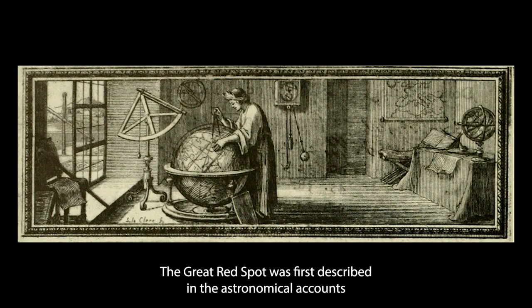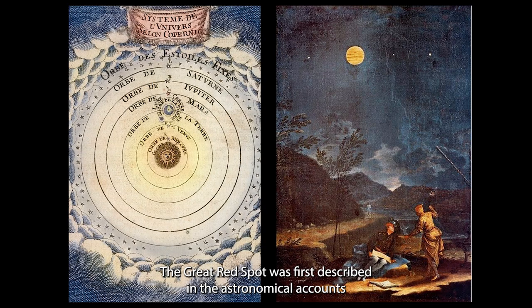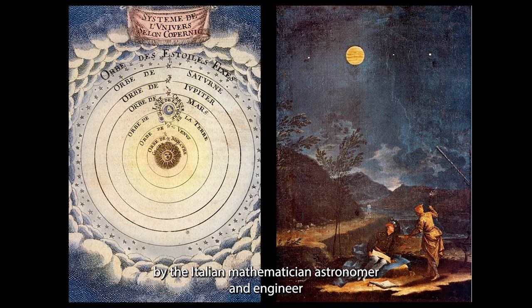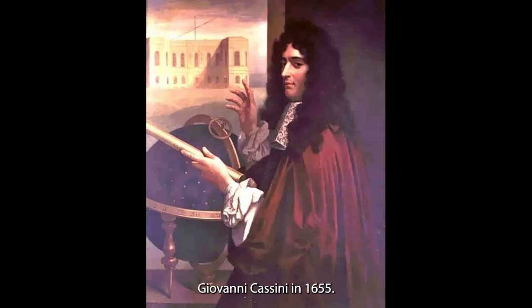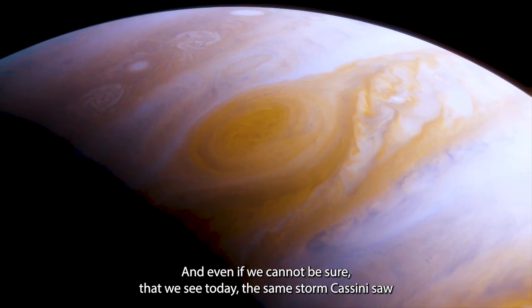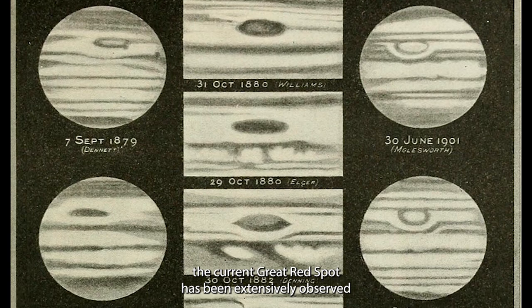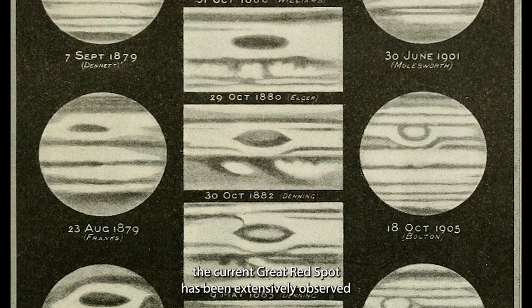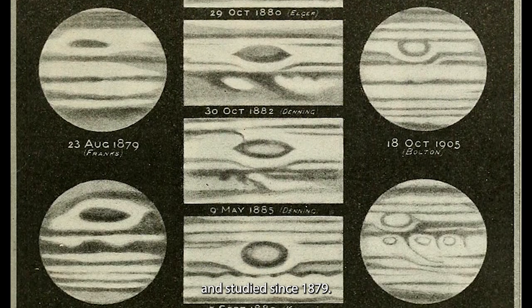The Great Red Spot was first described in the astronomical accounts of the Italian mathematician, astronomer and engineer Giovanni Cassini in 1655. And even if we cannot be sure that we see today the same storm Cassini saw, the current Great Red Spot has been extensively observed and studied since 1879.